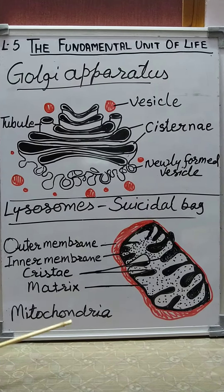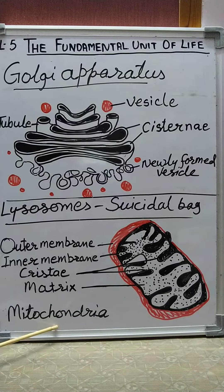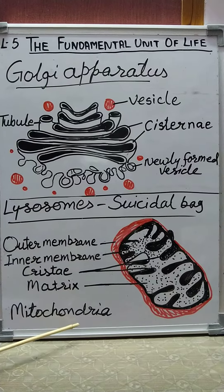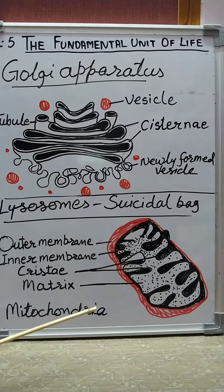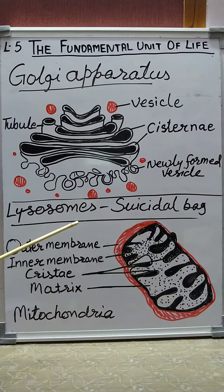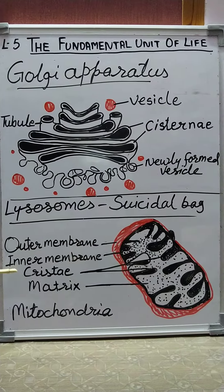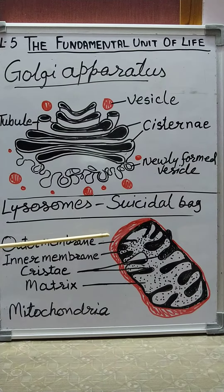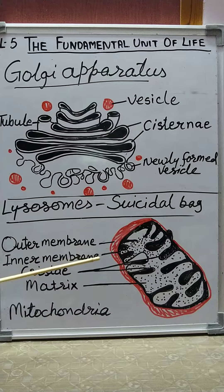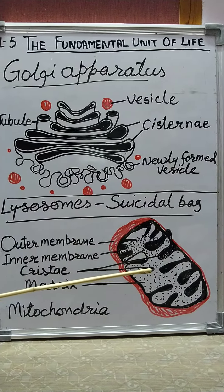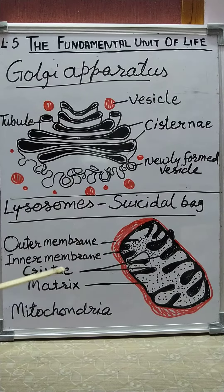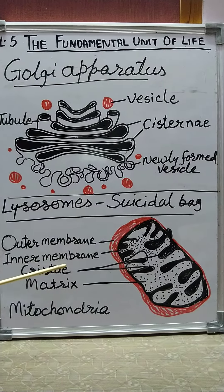The next cell organelle is mitochondria. The singular of mitochondria is mitochondrion. It is made up of a double-layered membrane — an outer membrane which is smooth, and an inner membrane which has folds called cristae. Oxysomes are present on the cristae.